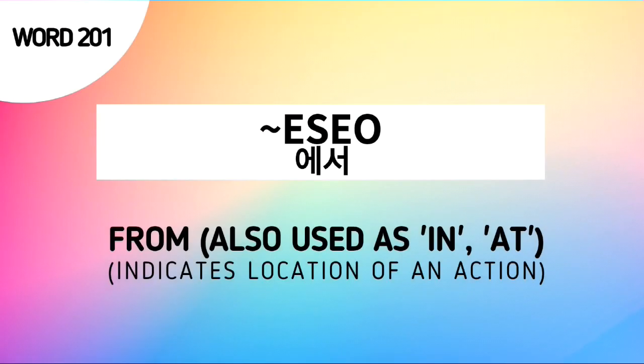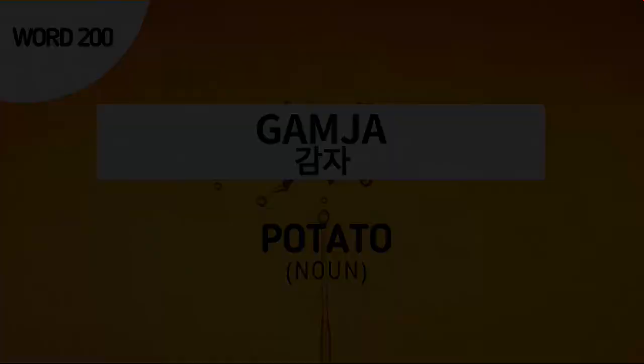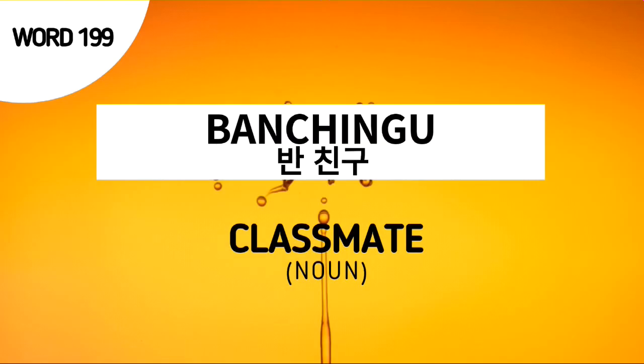Word number 201 is another particle, ESTO, which is used to say FROM, IN, or AT. Word number 200 is GAM JA, which means potato. And the last word for our review, word number 199, BANCHINGO, which means half friend or classmate.